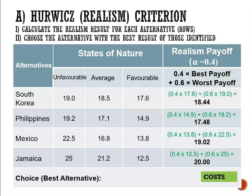We now have a single cost for each location: South Korea at 18.44 million, Philippines at 17.48 million, Mexico at 19.02 million, or Jamaica at 20 million. Based on the costs presented, the best alternative is Philippines with the lowest cost of 17.48 million. So for Hurwitz with alpha equals 0.4, the choice would be Philippines.